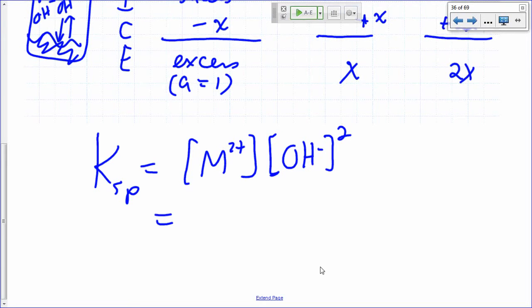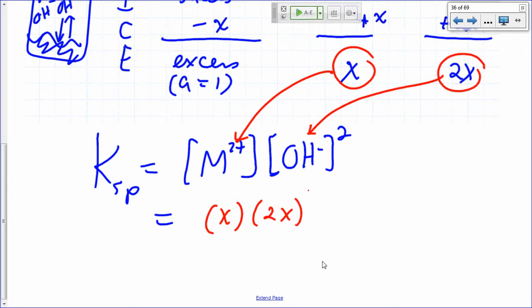So what's our M²⁺? Our M²⁺ is X. Our hydroxide is 2X. So this is going to be equal to X times (2X) squared. And how do I simplify this? What is (2X) squared? 4X² times X. So that's 4X³, right?